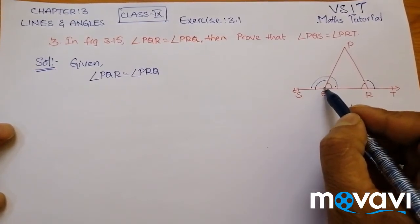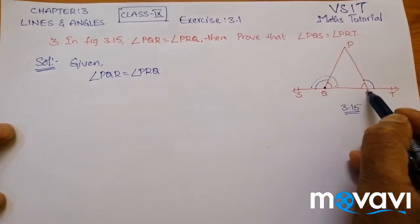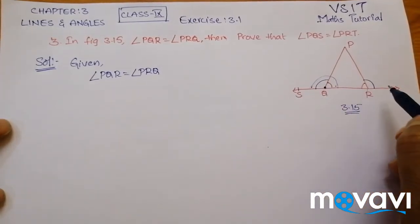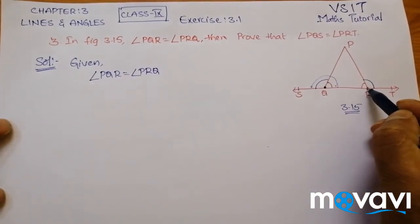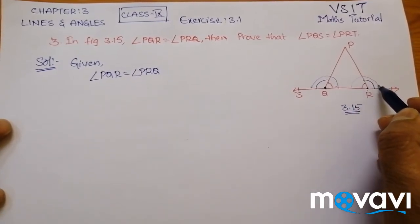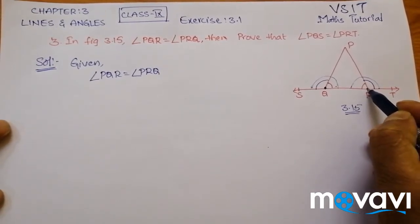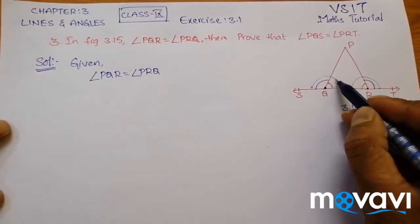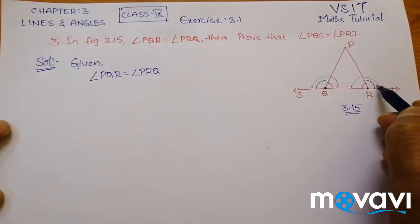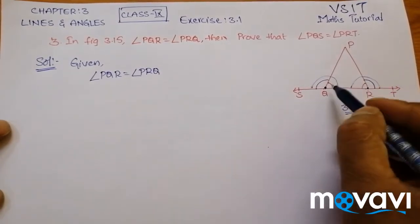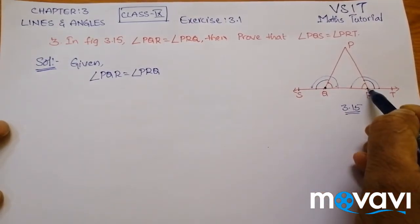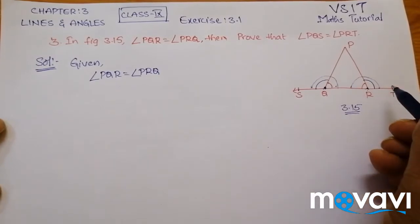So what is the angle at Q? That is angle SQR, which equals 180 degrees. And similarly, at point R, this angle — which is angle QRT — will also be 180 degrees. Since both equal 180 degrees, angle SQR is equal to angle QRT.